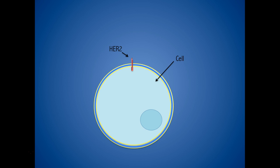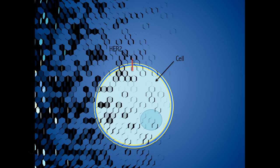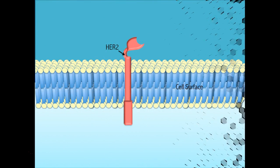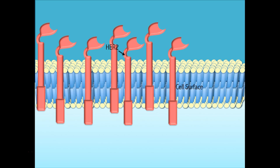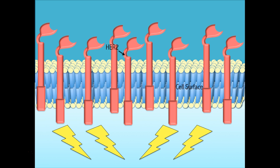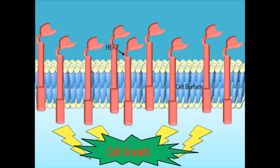HER2 is a protein found on the surface of the cell. In normal cells there are roughly 5,000 HER2 proteins on the surface, but in HER2 positive breast cancer there are over two million. This extra HER2 leads to the cancer cells to grow out of control.